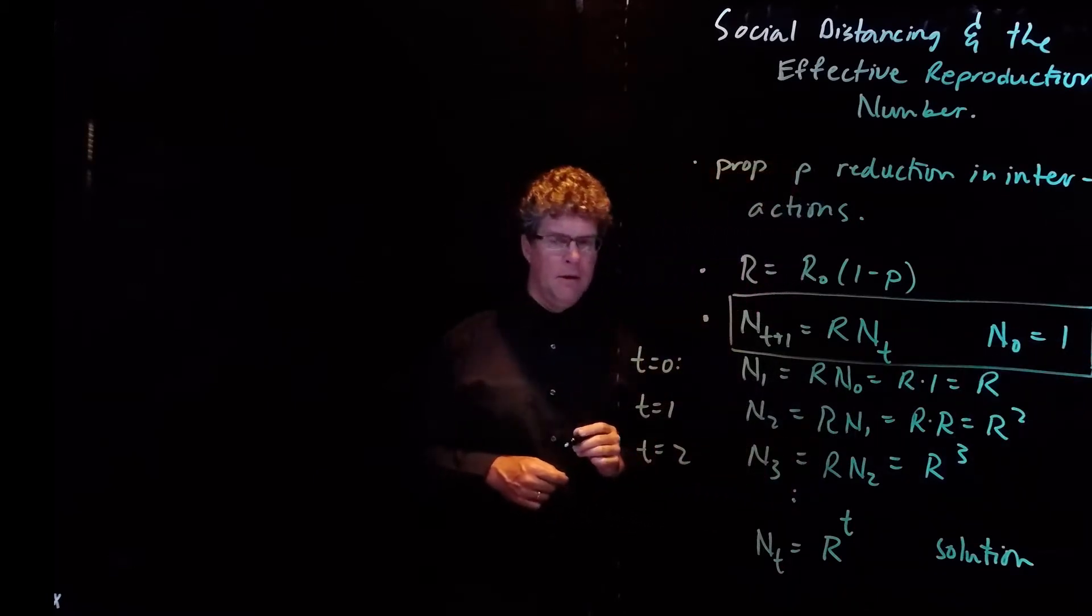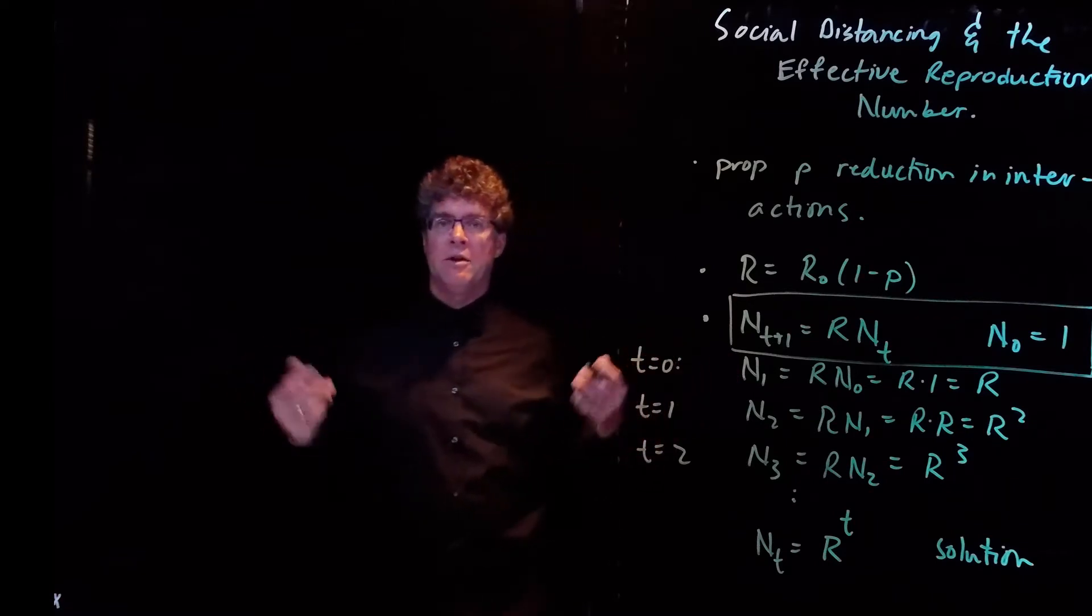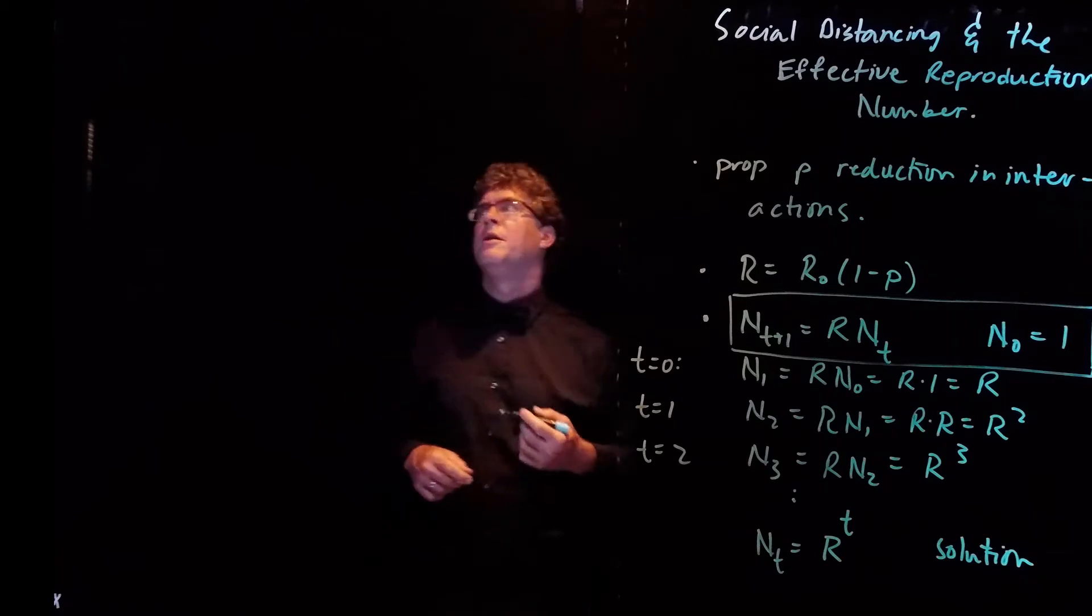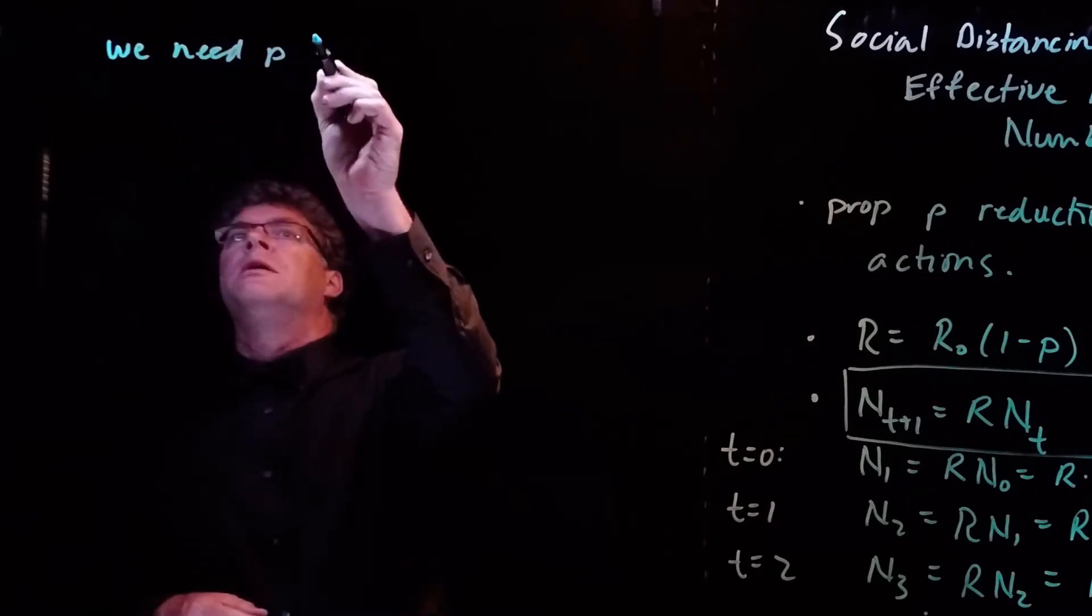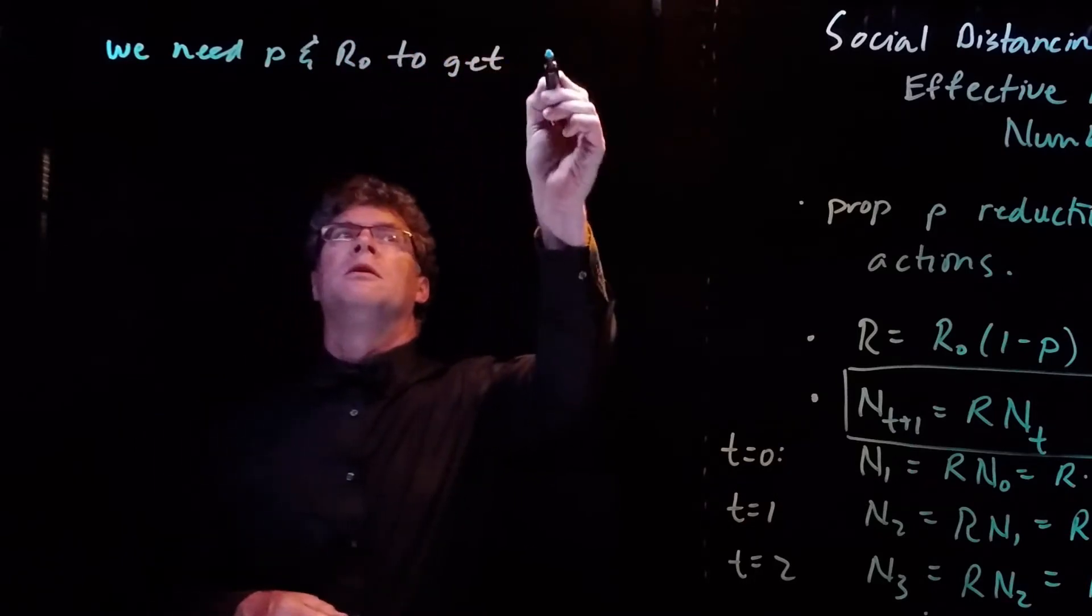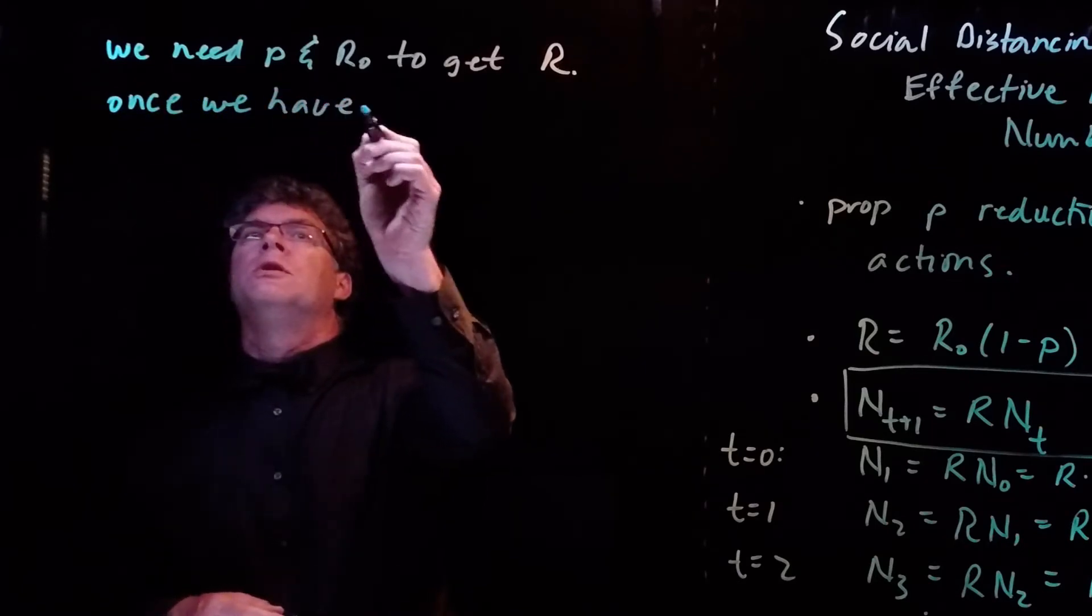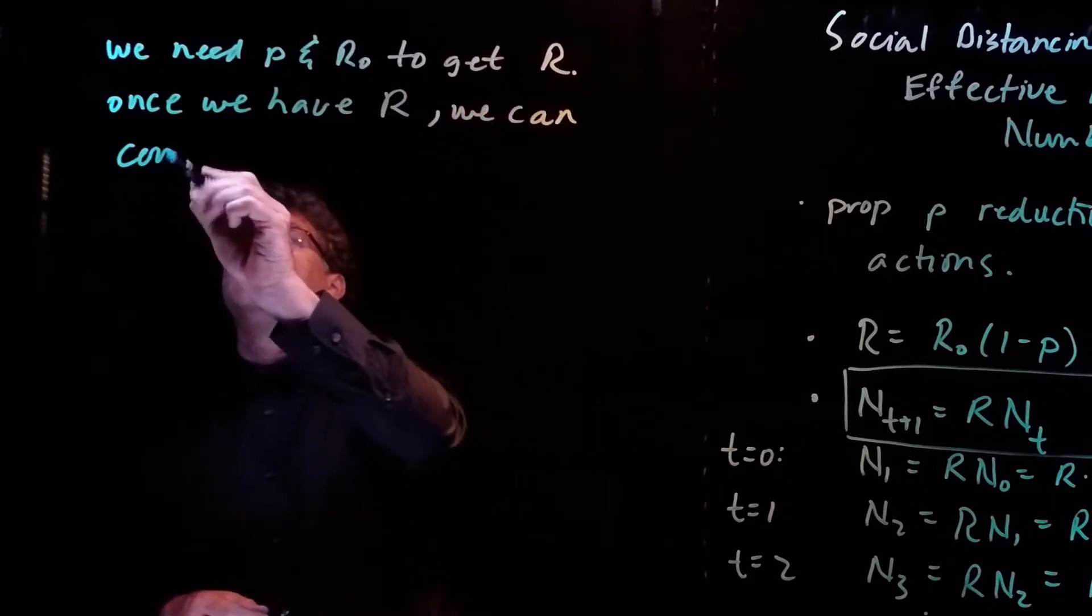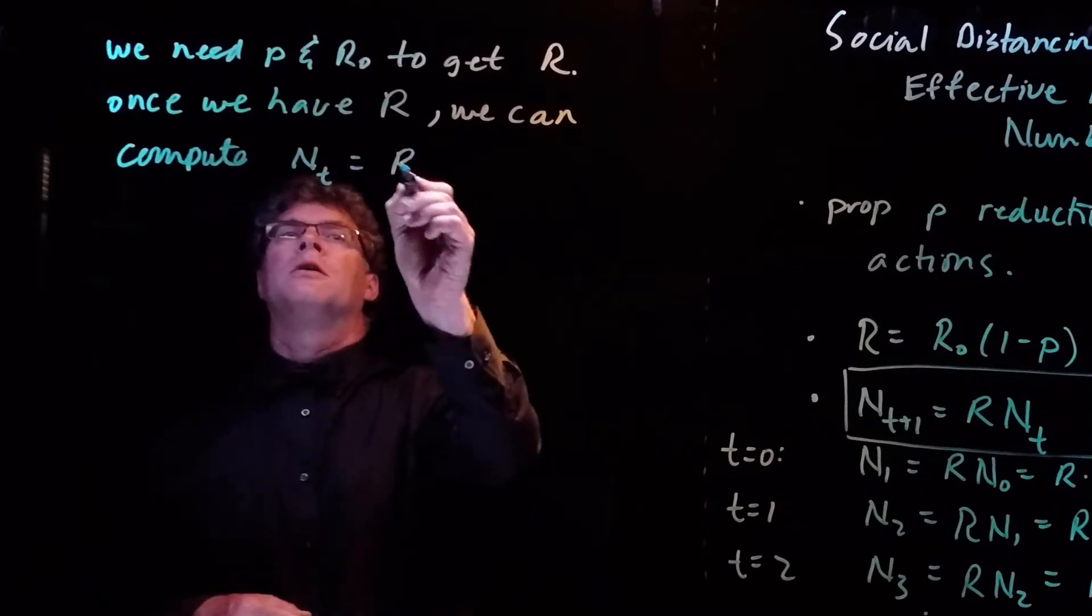This is the solution to our original model. So what does that tell us? It tells us that we can compute the number of infected people under social distancing if we know what the value of p is and the value of R₀. So we need p and R₀ to get R, and then once we have R, we can compute N_t equals R to the tth power.